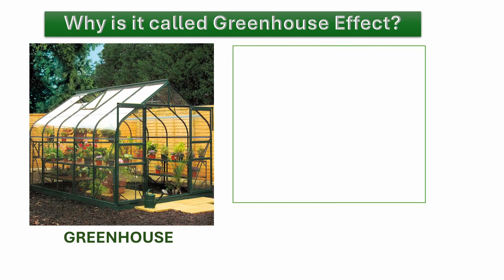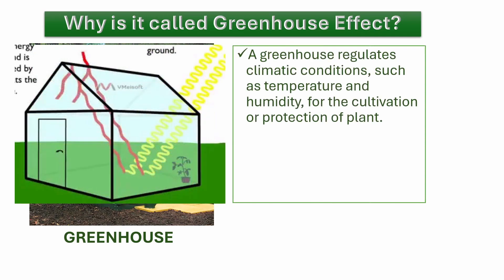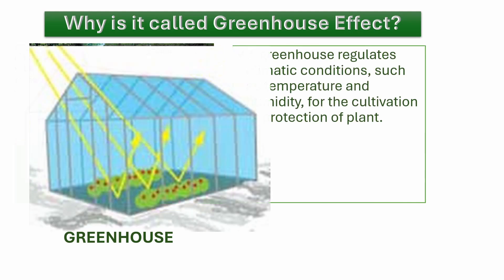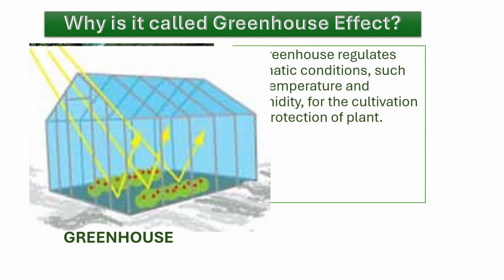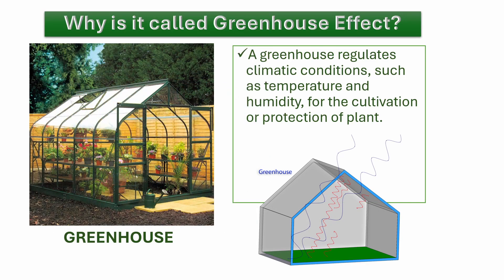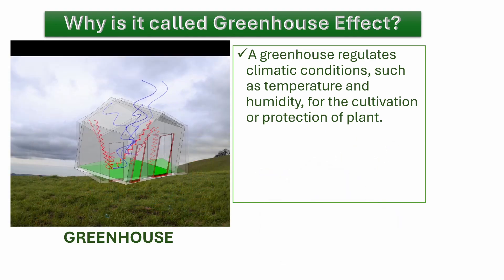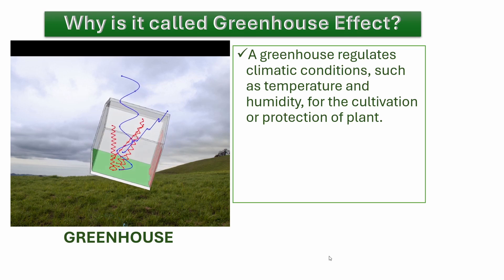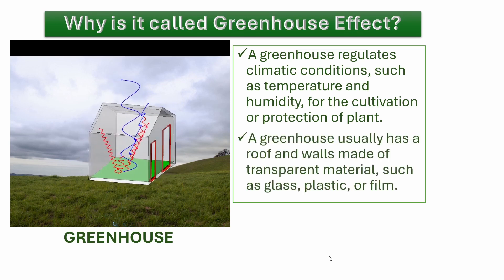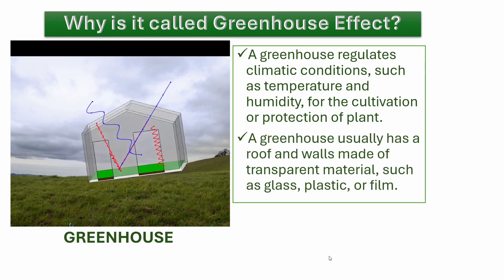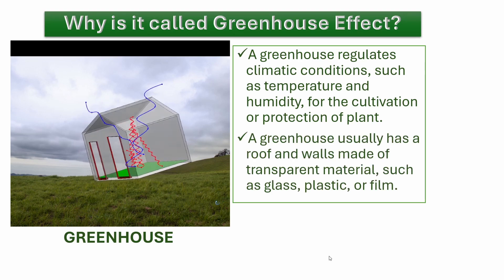A greenhouse is a house or structure to regulate climatic conditions such as temperature and humidity for the cultivation of plants. A greenhouse usually has a roof and walls made of transparent materials such as glass, plastic, or films.